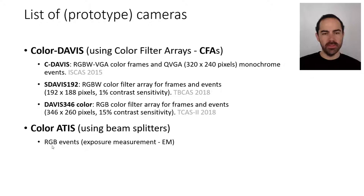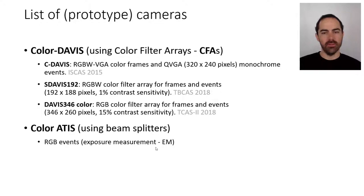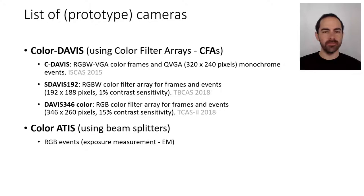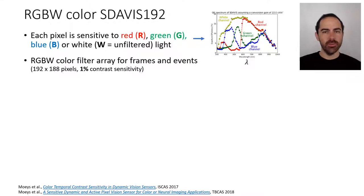At the bottom of the list we have a prototype sensor that is a combination of three ATIS chips together. Instead of change detection events, they give exposure measurement events — grayscale events — but because each event belongs to a different color channel, we have color events. This is a different type of color event: absolute intensity instead of change detection.